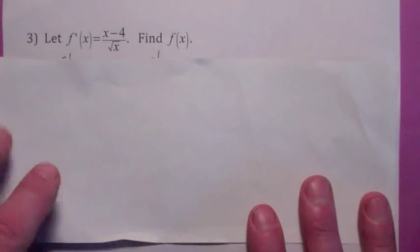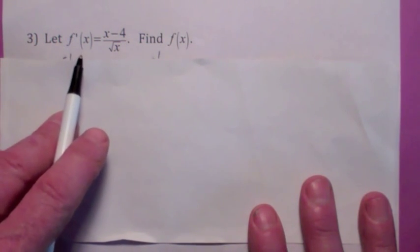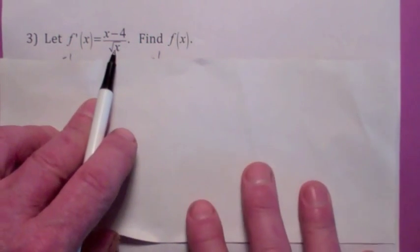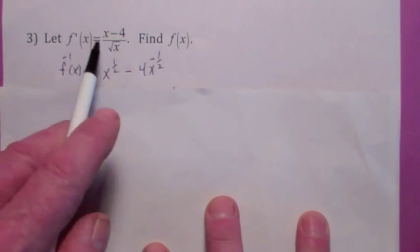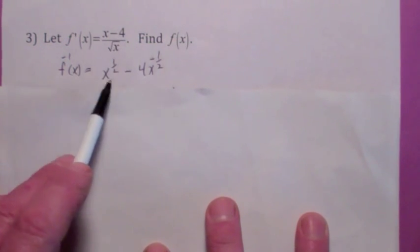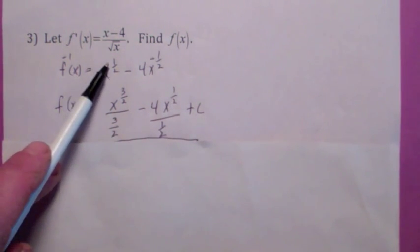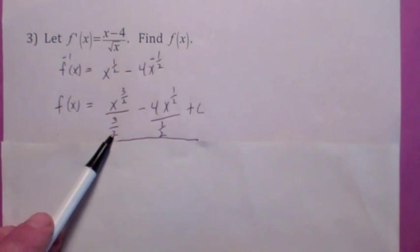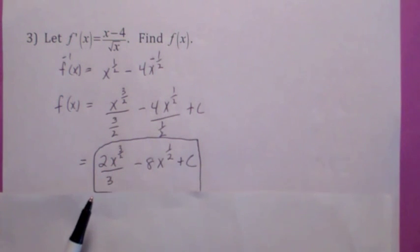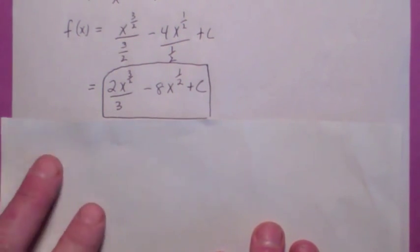Here I'm giving you the derivative and I want you to find f — this is just another way of saying find the antiderivative. Sometimes you have to play around with the function first. You can break x minus 4 over the square root of x into x over the square root of x minus 4 over the square root of x, which gives x to the 1 half minus 4x to the negative 1 half. Now find the antiderivative of each: add 1 to the exponent and divide by the new exponent. Simplified, you get 2x to the 3 halves over 3, minus 8x to the 1 half, plus C.